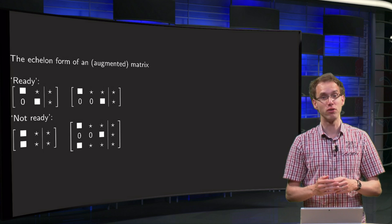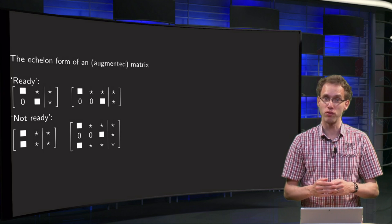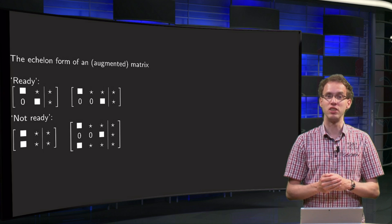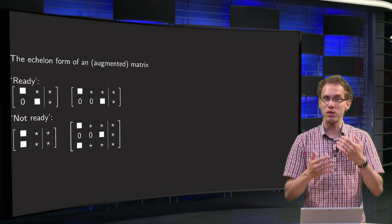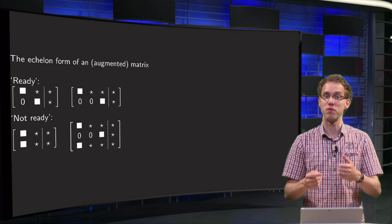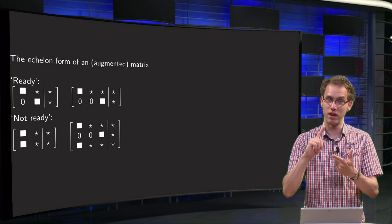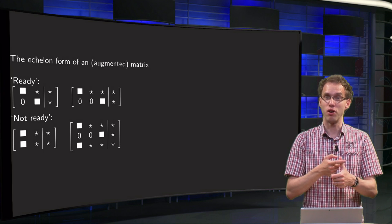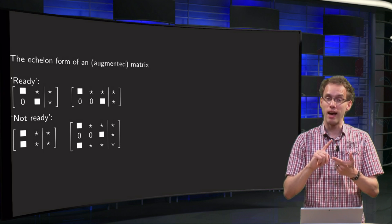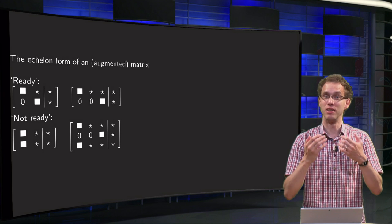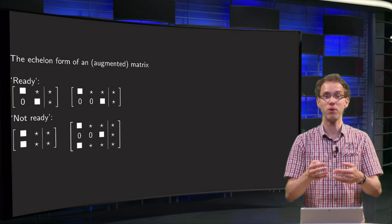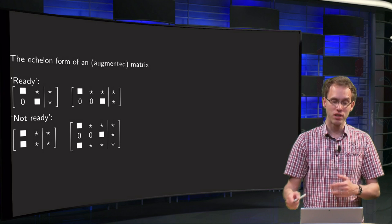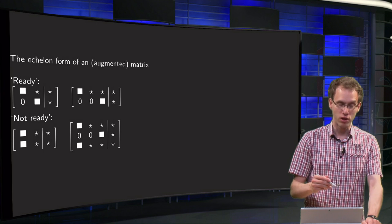We will learn the so-called echelon form or the reduced echelon form. Let us look at a few examples of augmented matrices. It's not so important what the numbers exactly are; the only thing which is important is whether I have a zero, whether I have an element that is non-zero, or any element. So zero will be zero, a square will designate a number which is not equal to zero, and a star may be any number.